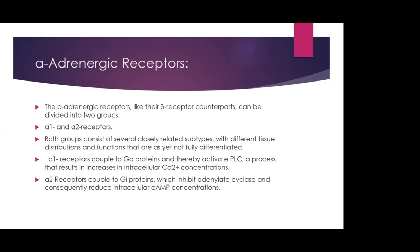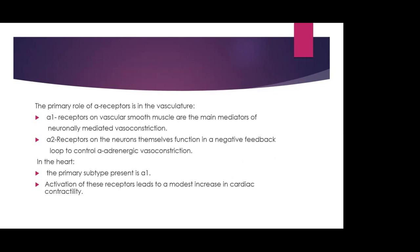Alpha adrenergic receptors can be divided into two groups: alpha-1 and alpha-2, each consisting of several closely related subtypes with different tissue distribution and function. Alpha-1 receptors couple to GQ proteins and activate PLC, increasing intracellular calcium concentration. Alpha-2 receptors couple to GI proteins, inhibiting adenylate cyclase and reducing intracellular cyclic AMP. The primary role of alpha receptors is in the vasculature. Alpha-1 receptors in vascular smooth muscle are the main mediators of neurally mediated vasoconstriction. Alpha-2 receptors on neuronal cells function in a negative feedback loop to control alpha adrenergic vasoconstriction. In the heart, the primary subtype is alpha-1, and activation leads to a modest increase in cardiac contractility.